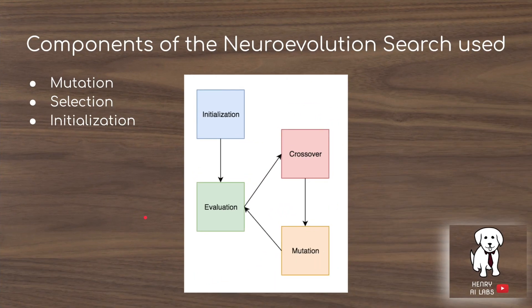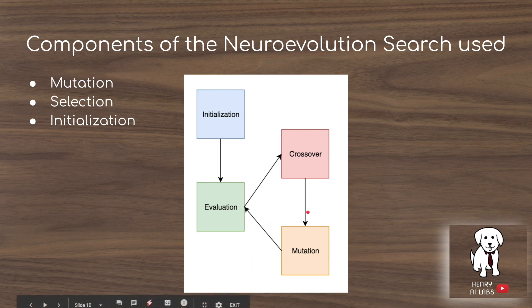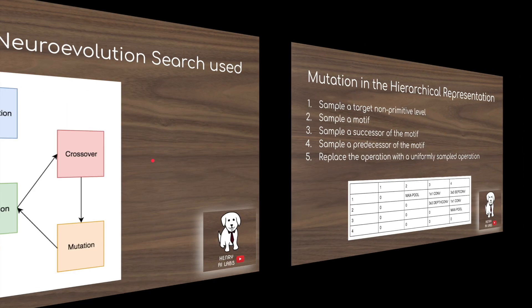This is the neuroevolutionary search used over the hierarchical neural architecture space. In neuroevolutionary algorithms we always have initialization, evaluation, and crossover, though sometimes crossover is omitted — and in this case it is. The focus here is on the mutation, selection, and initialization techniques used in this paper.